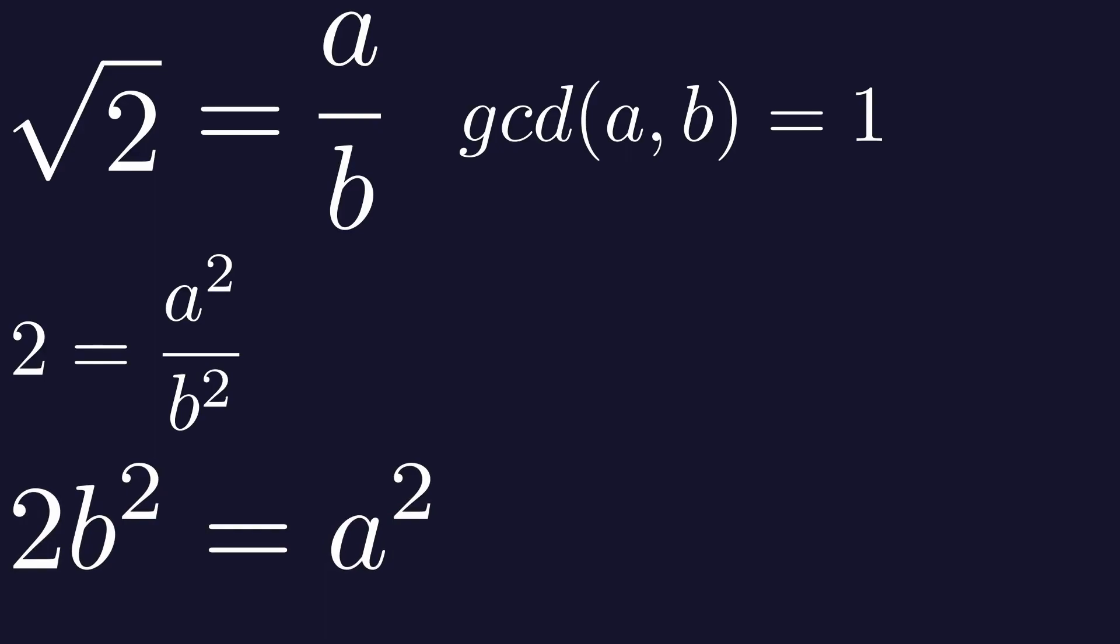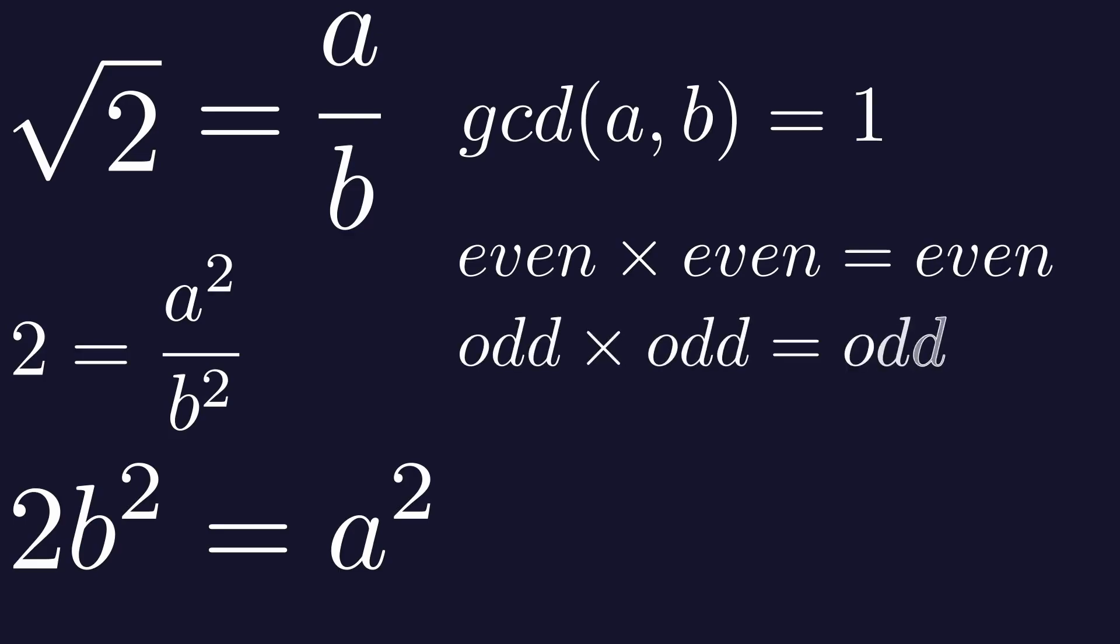From this we can conclude that a squared must be even, because it equals some integer b squared times 2. Another important fact is that if we multiply an even number by an even number, we also get an even number, and the same goes for odd numbers. Odd number times odd number equals an odd number. So if a squared is even, it means that a also must be even.